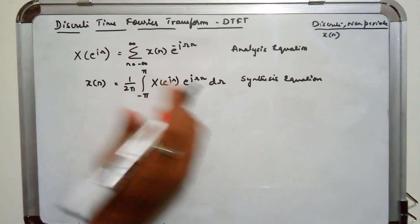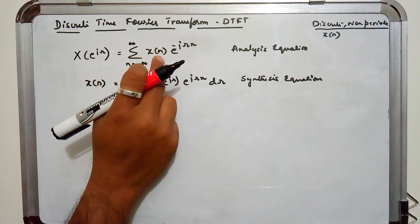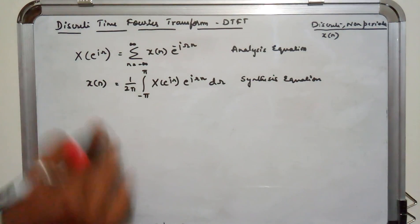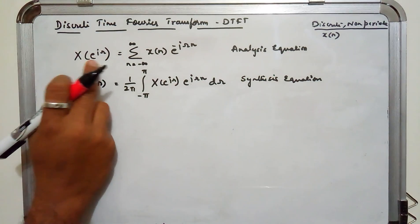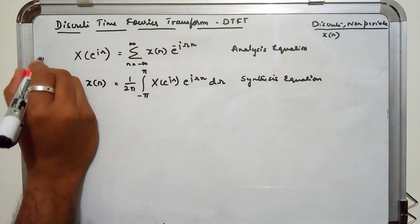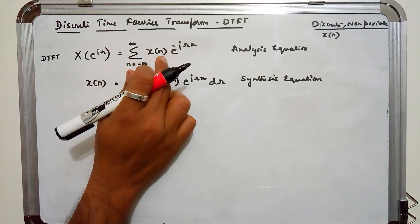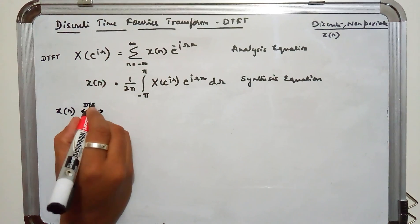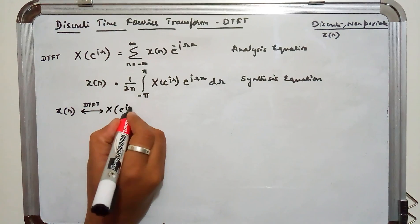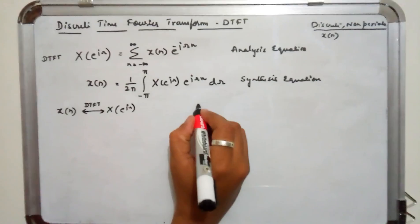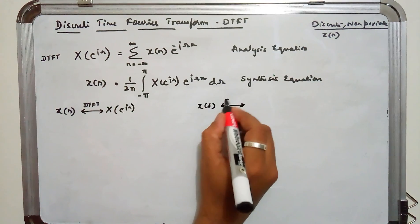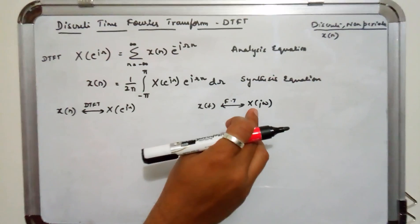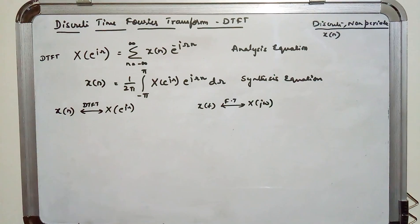If you have X[n], we know it is discrete, so the integration in CTFT will be replaced by summation in DTFT — that is a basic change. X(e^jω) is the DTFT of X[n], so X[n] forms a DTFT pair with X(e^jω). Whereas in CTFT, X(t) forms a Fourier transform pair with X(jω). For continuous time you have CTFT; for discrete time you have DTFT.